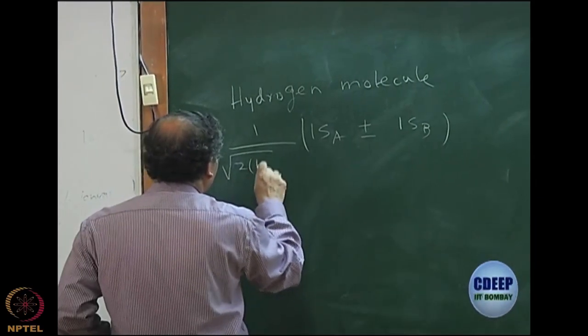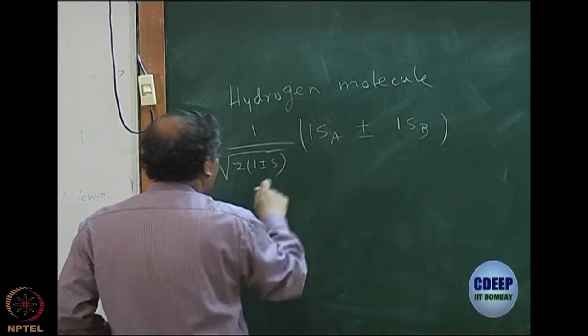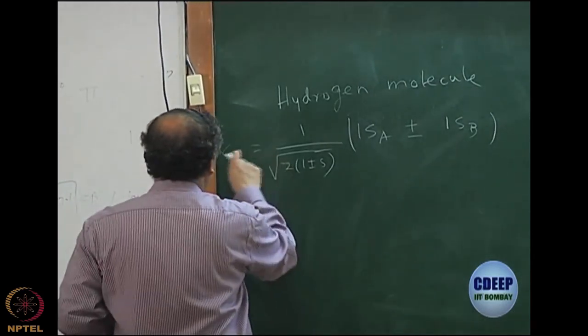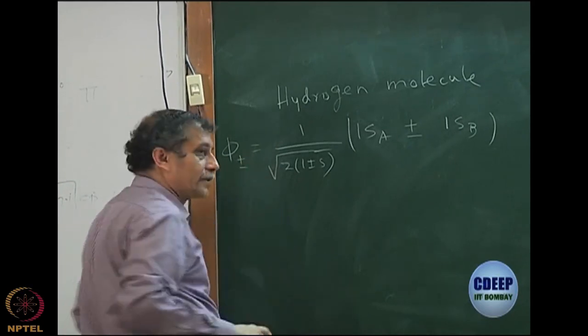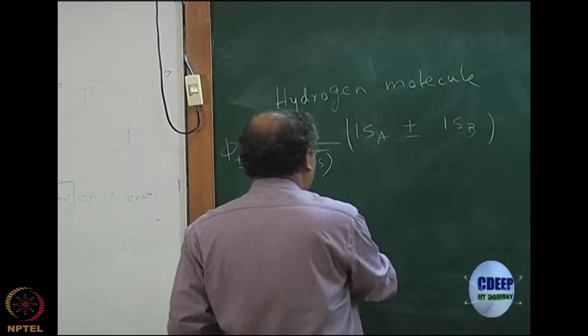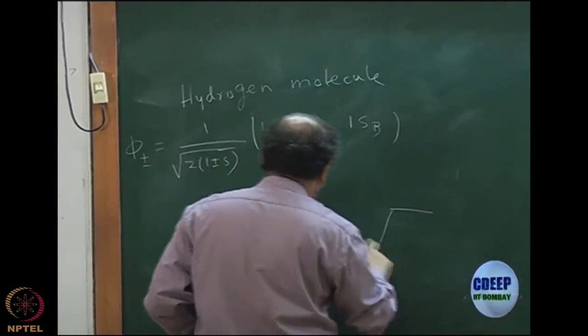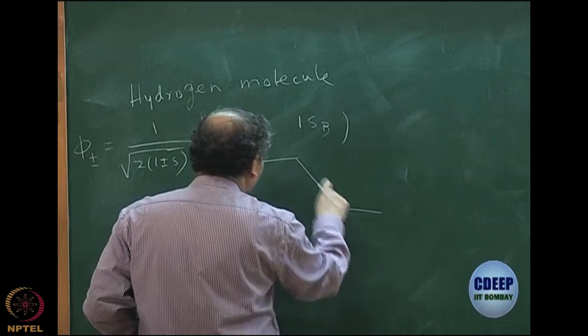2 into 1 plus minus s, where s is overlap between 1s_a and 1s_b. You get what is called the bonding orbital or an anti-bonding orbital. That is very famously done in the textbooks as two 1s functions giving you two molecular orbitals.